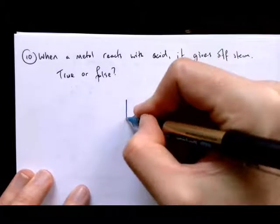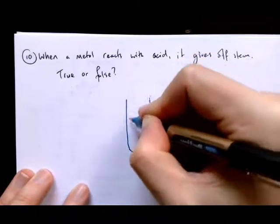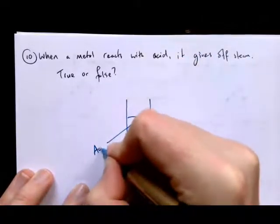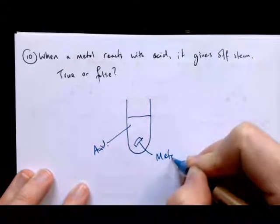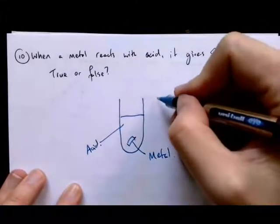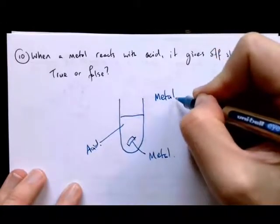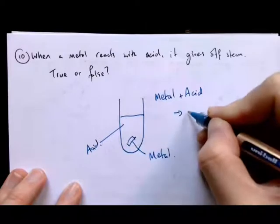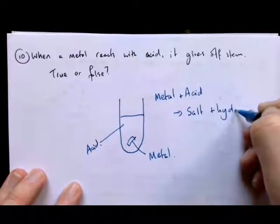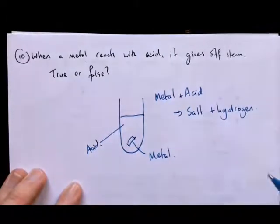Like I said in the video, if we have some acid here, we put a bit of metal in. We're going to do the reaction. Metal plus acid gives us salt plus hydrogen.